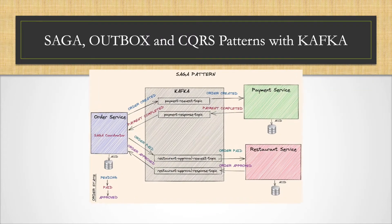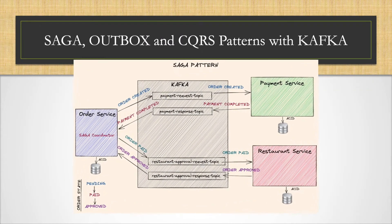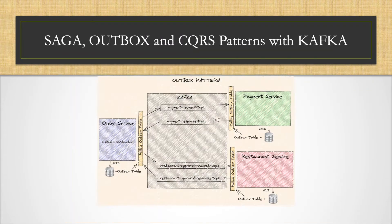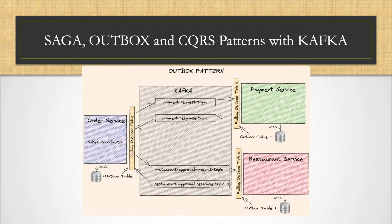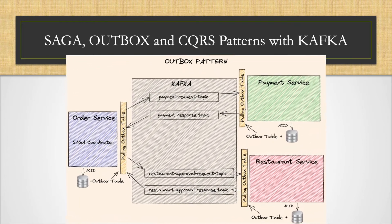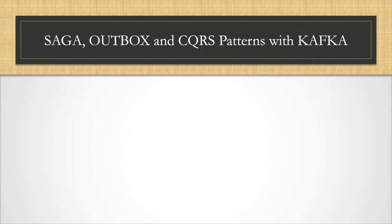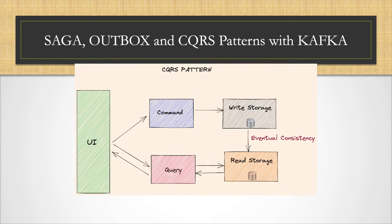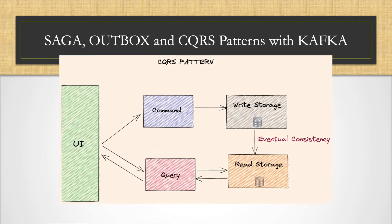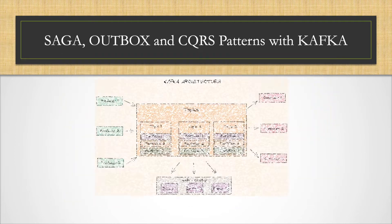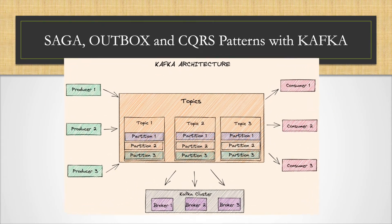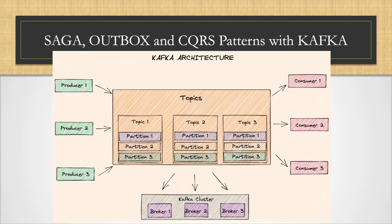You will implement Saga, Outbox, and CQRS patterns using five Spring Boot microservices that communicate using events with Kafka as the event store.